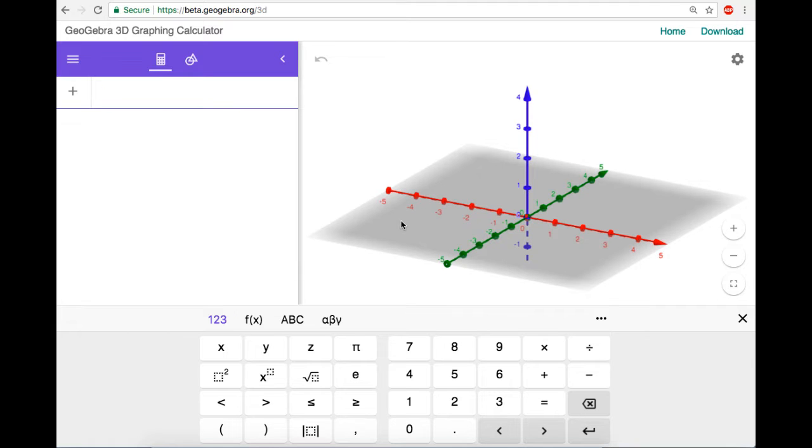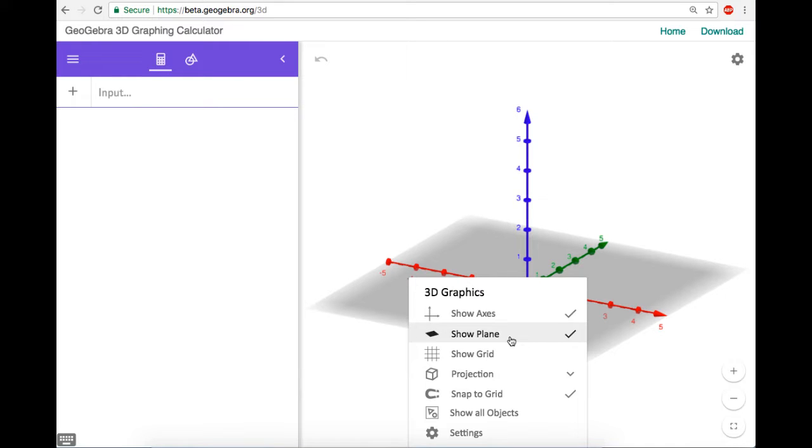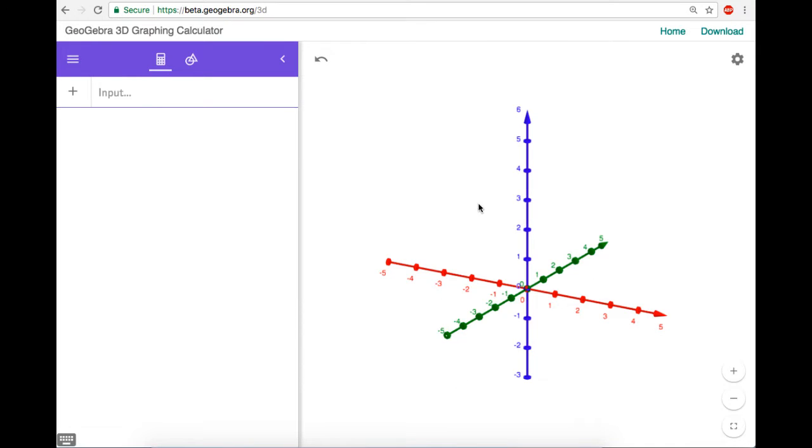Okay, so there's a couple things I see. First thing I'm gonna do is I'm actually gonna right click on this, and I'm gonna hide this plane, because it doesn't really help with what we're doing.